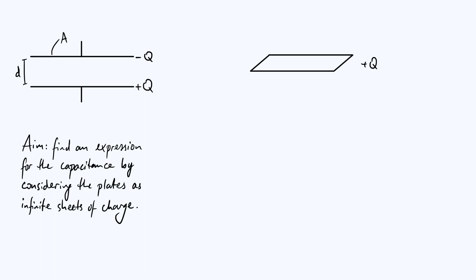I've just added on the right-hand side a more three-dimensional diagram of one of the plates — the plate charged with plus Q. Simply because it's charged, it's going to be producing its own electric field. What can we say about the direction of that field? Remember that the surface of a conductor in electrostatics is an equipotential, meaning the electric potential is constant everywhere on the surface. If that were not the case, electrons would just move around until that potential difference no longer existed. So the field must be normal to the surface of the conductor.